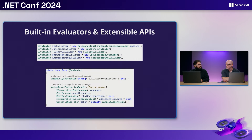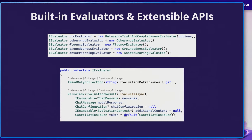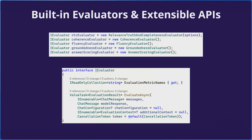We've been thinking about how to bridge the gap between years of experience testing traditional software and this new set of AI applications. What you're seeing is that it starts with APIs and libraries. We've been working with customers, partners inside Microsoft, and Microsoft Research to come up with built-in evaluators provided out of the box — things like coherence, fluency, and groundedness — that allow you to evaluate AI applications right away.